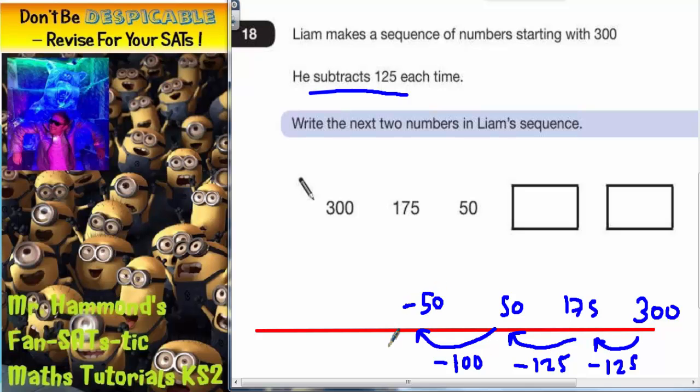So, take another 50 from 0 would actually get you to negative 50. But then we need to take away another 25 so that we've taken away 125 altogether. If you take away 25 from negative 50 and go backwards, you're going to get to negative 75. So that is the first answer in the box, negative 75.